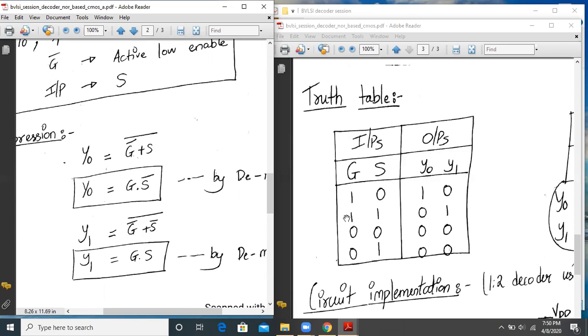Similarly, in the second case, when G is 1 and S is 1, Y0 will be 0 because it will be 1 into 0. And similarly, Y1 will be, G and S both are 1 and 1, logic 1 and logic 1, so Y1 will be 1. So Y0 and Y1 will be only 1 for these two conditions.